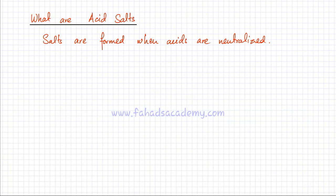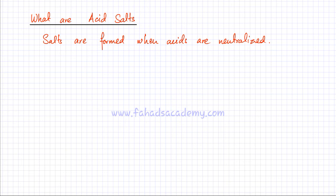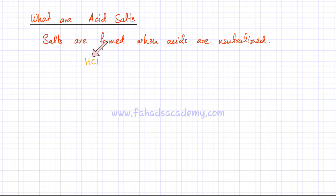In this video lecture we're going to learn what is meant by the term acid salt. Previously we had studied that salts are formed when acids are neutralized. If you have an acid like HCl, the only reason this molecule is an acid is because it is capable of producing an H⁺ ion. But if you get rid of that H⁺ ion and replace it with any other positive ion, it will get neutralized.